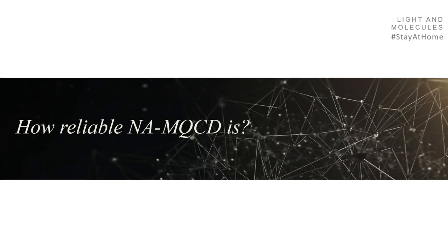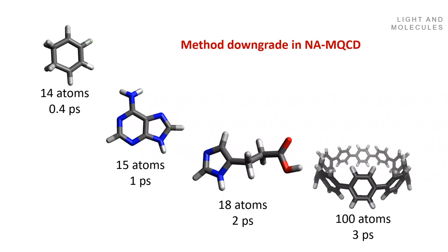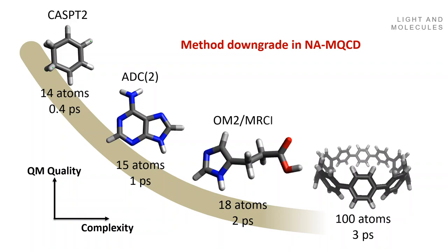How reliable is non-adiabatic mixed quantum classical dynamics really? My team has computed an ensemble of molecules in recent years — real simulated cases. Starting with a small cyclohexa-1,3-diene (14 atoms, half picosecond), then adenine (15 atoms, one picosecond), then a molecule of 18 atoms (two picoseconds), then a larger system of 400 atoms (three picoseconds). The complexity increases from left to right: more atoms, longer simulation times.